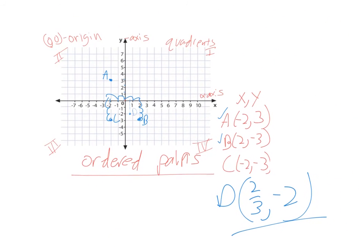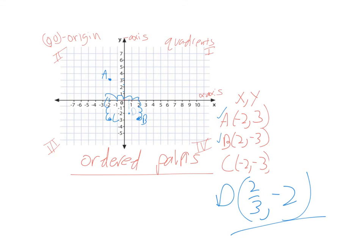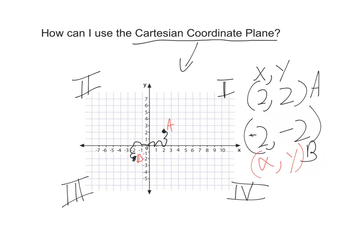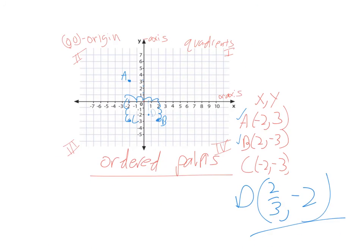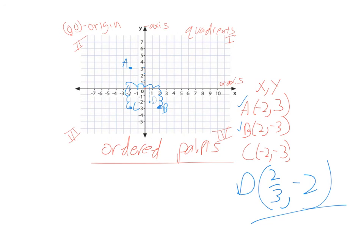And I can zoom out here and see that. So again, this is ultimately how can I use the Cartesian coordinate plane, and we just use it to put ordered pairs on there using x and y coordinates.